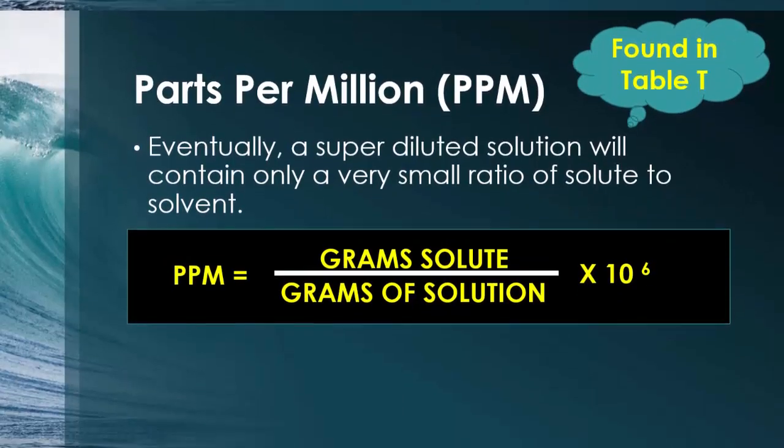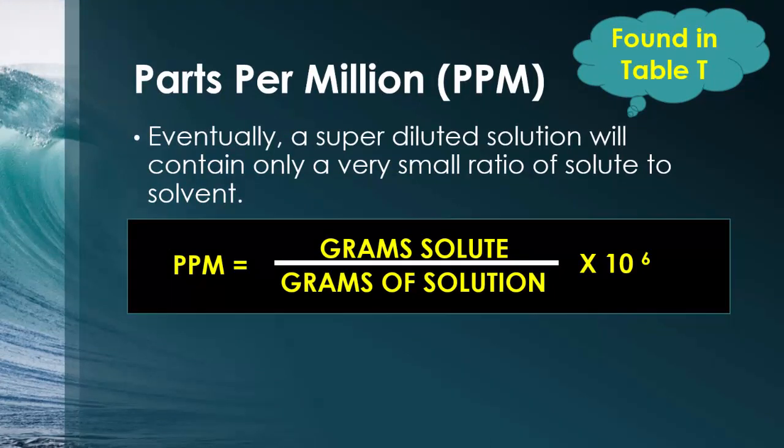So, what is the formula? The formula for parts per million is going to be pretty simple. All what you're doing, again found on table T, is you're taking your grams of your solute, the grams of the solid, and you divide it by the total amount of grams of solution. Solution is solvent plus the solute. They will try to trick you guys. They'll say you have this much water and you have that much of your solid but you have to add the two together. We'll be doing a practice problem like that in a second. Anyway, but you take your grams of solute divided by your grams of solution and you multiply it by a million. Ten to the sixth is a shorter way of writing a million.